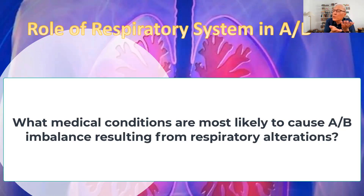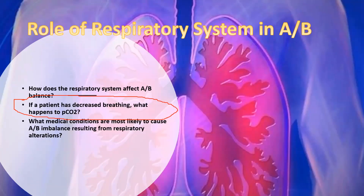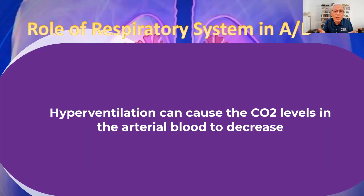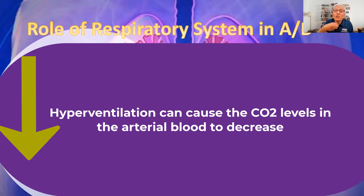What medical conditions are most likely to cause acid-base imbalance resulting from respiratory alterations? COPD, or chronic obstructive pulmonary disease, is one example. Any time there is an alteration in respiratory rate or respiratory depth, there will be an alteration in acid-base balance. For example, if you are very anxious and start breathing rapidly, your carbon dioxide will decrease because you are blowing it off.